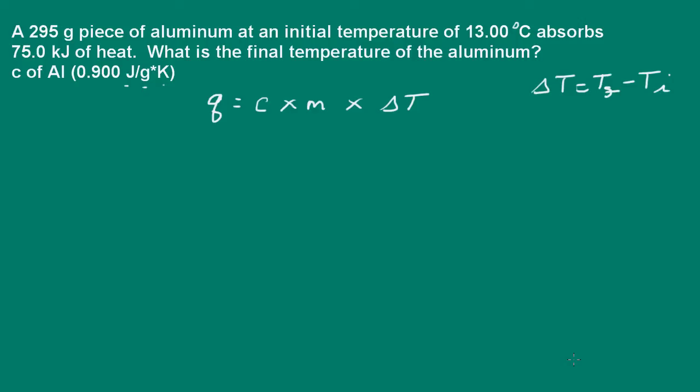Here we're told that we have a 295-gram piece of aluminum that has an initial temperature of 13 degrees Celsius, and it absorbed 75 kilojoules of heat. What is the final temperature of the aluminum?